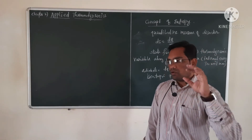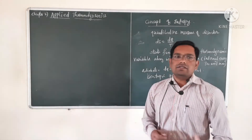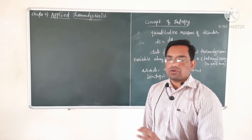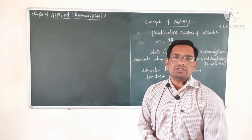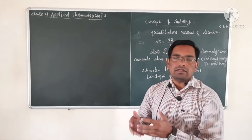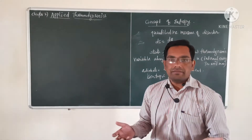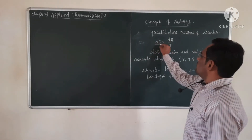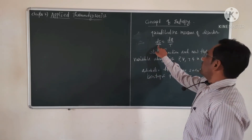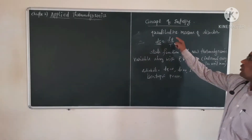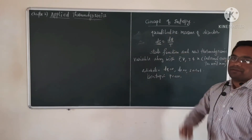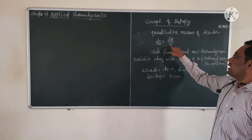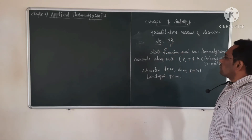Entropy is a concept that is not very easy to understand or grasp, but it is related to a quantitative measure of disorder — disorder related to position, size, shape, and all those physical things we can see, as well as things we cannot see. If you look at the formula for entropy: ds is the change in entropy, and the change in entropy ds is equal to dq divided by T, where dq is the amount of heat energy absorbed or rejected at temperature T. This is the formula for change in entropy.